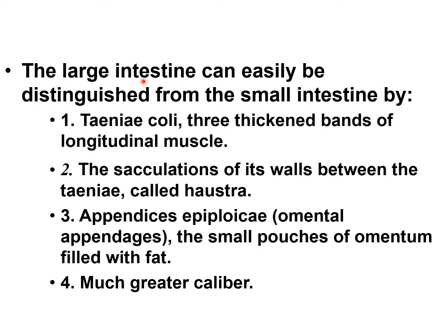The large intestine can easily be distinguished from the small intestine. There are three thickened bands of longitudinal muscle in the large intestine; these three thickened bands are called taenia coli. The large intestine also has sacculations of its wall in between the taenia, and those sacculations are called haustra.